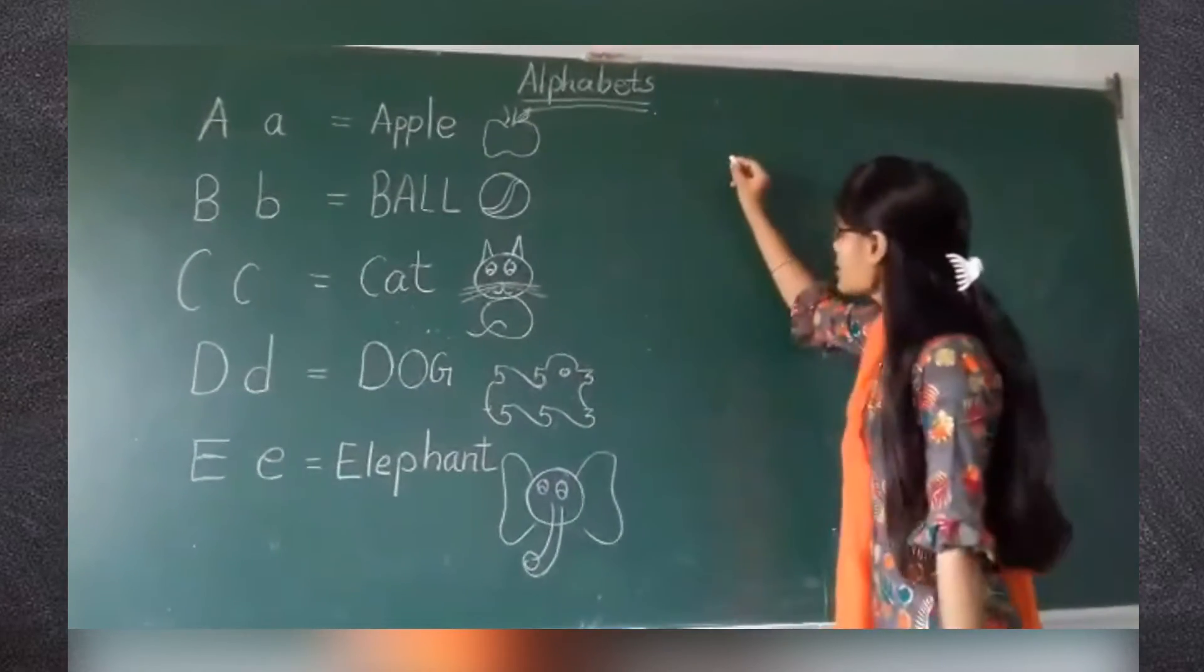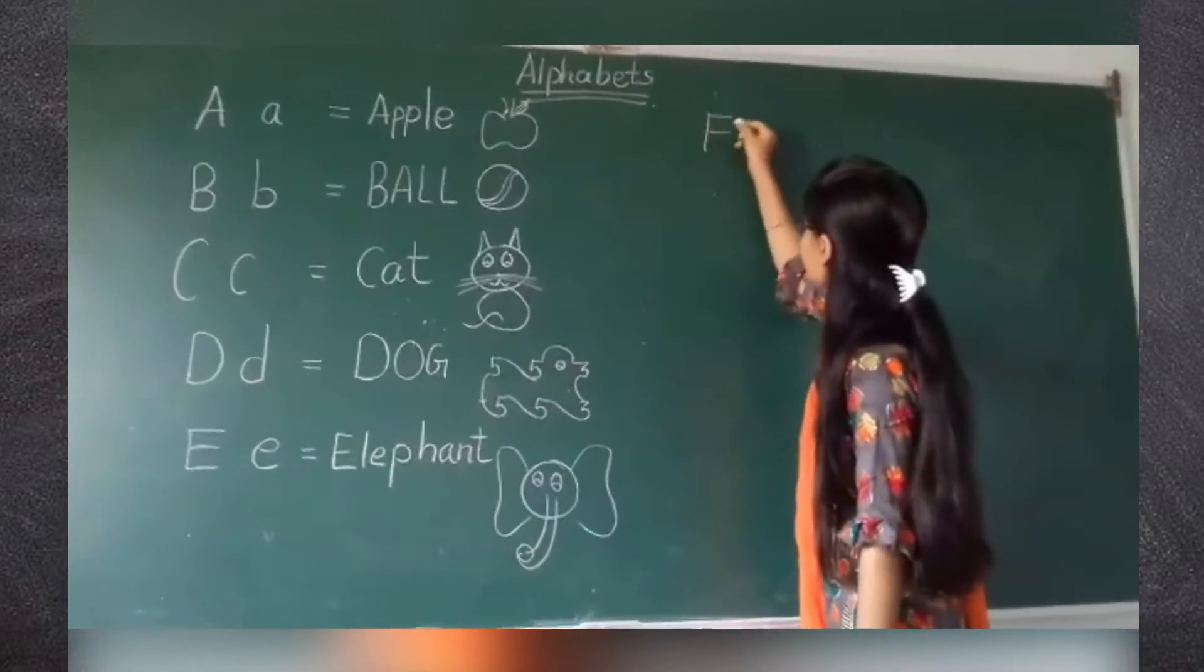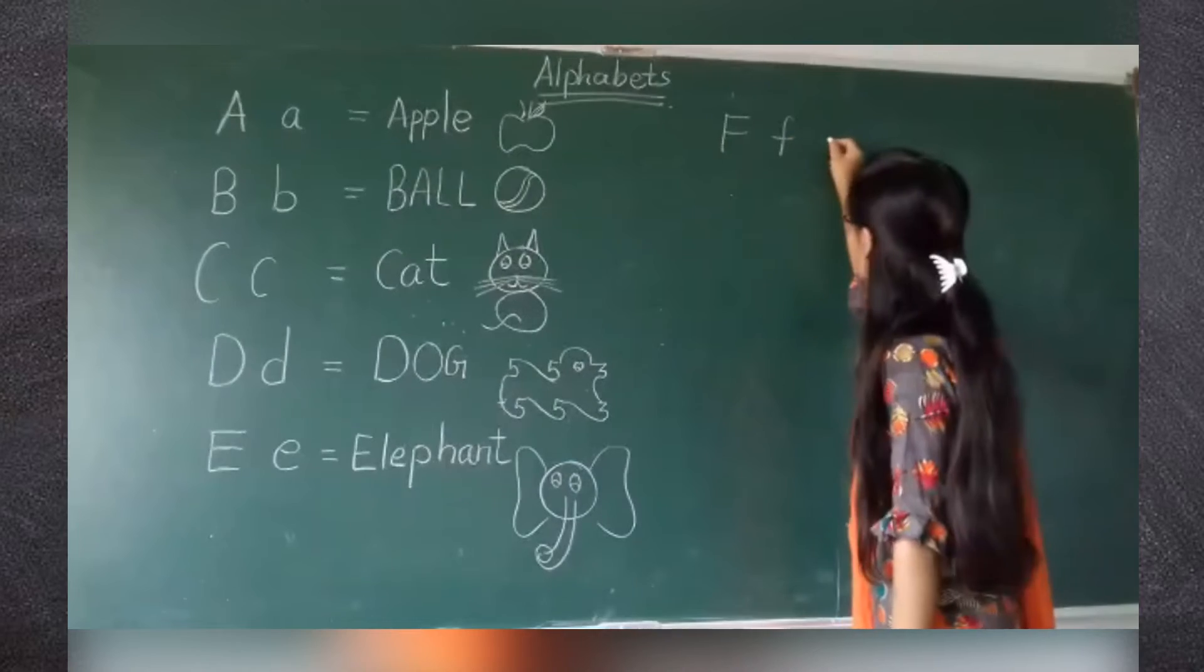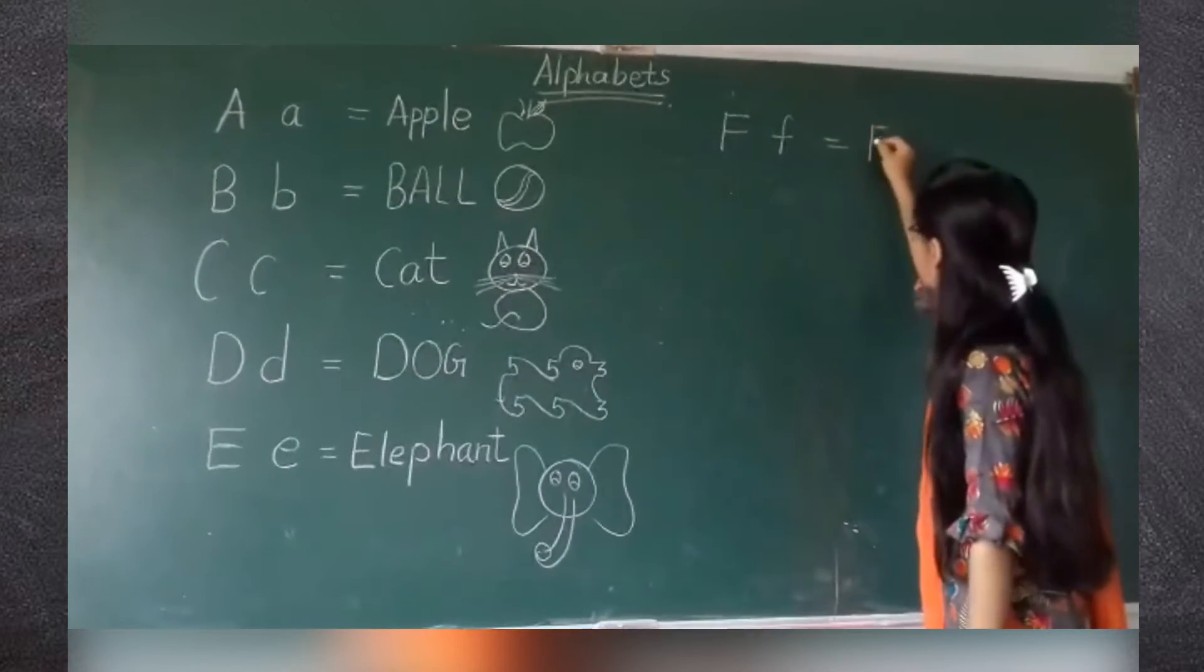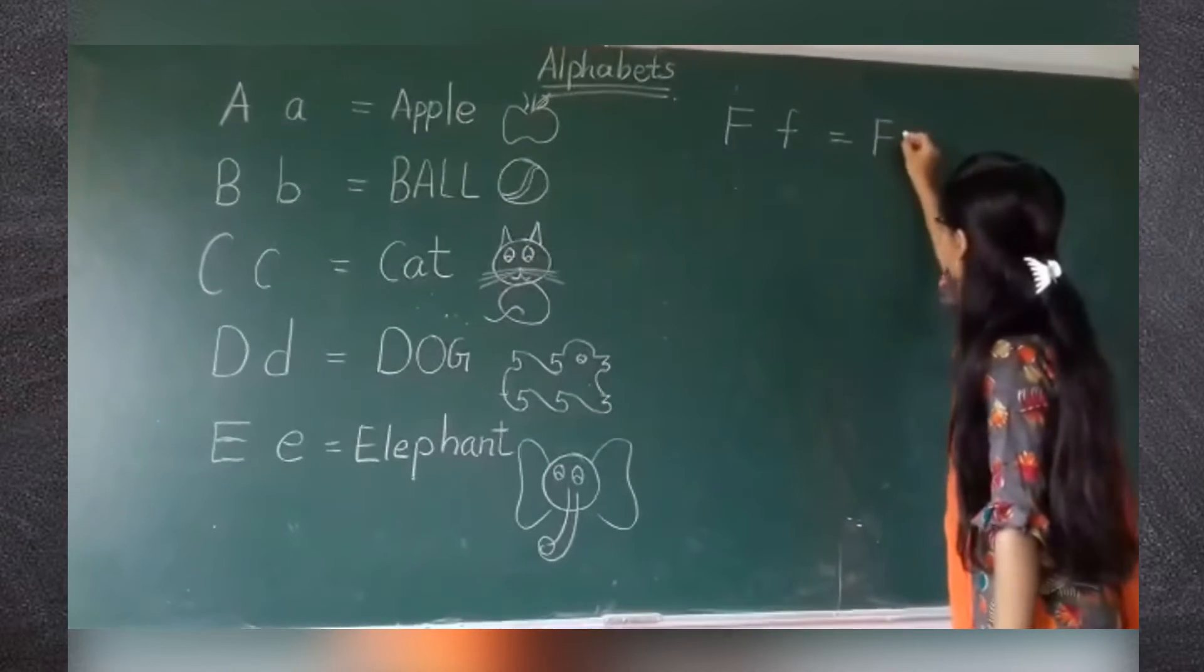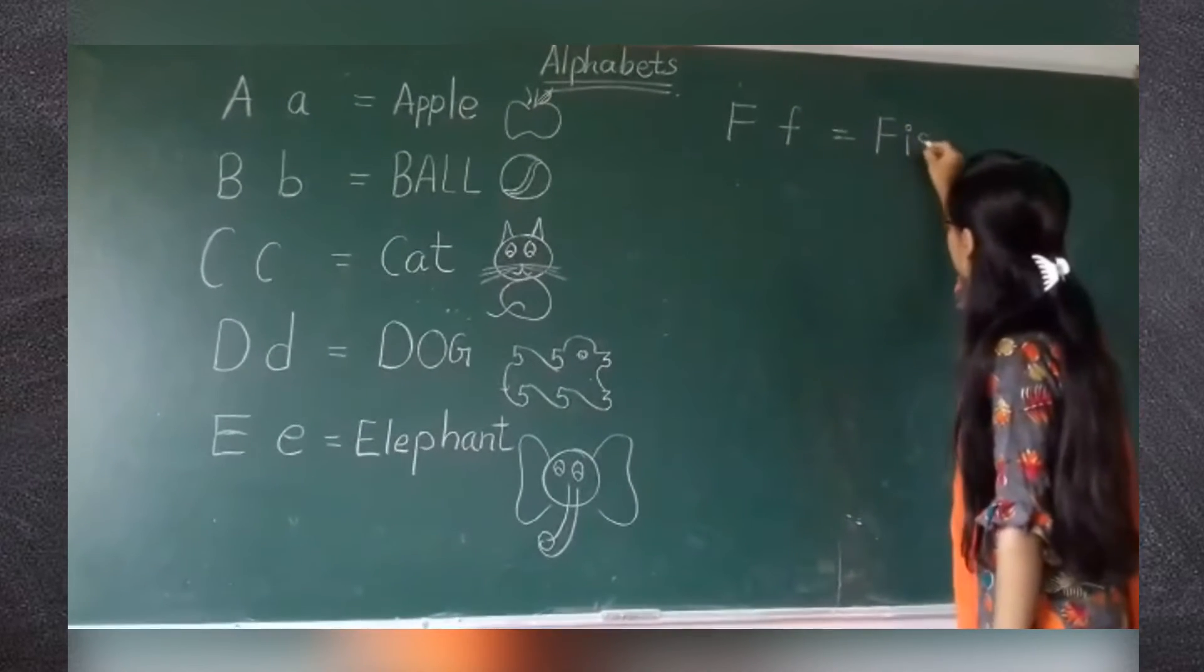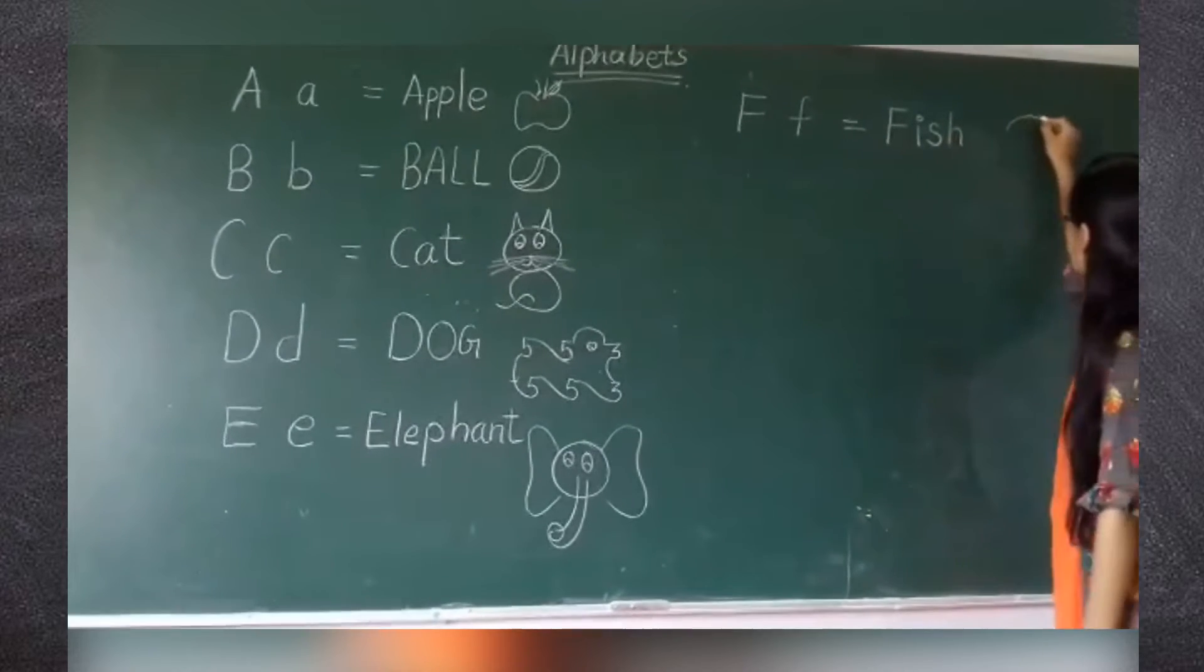Now next is F for fish. Capital F and this is small f. Spelling of fish is F-I-S-H. Fish.